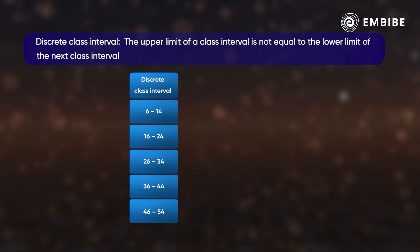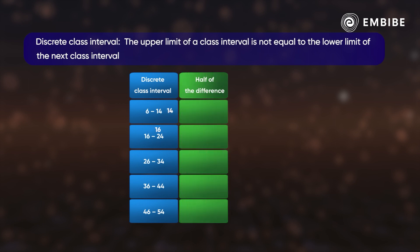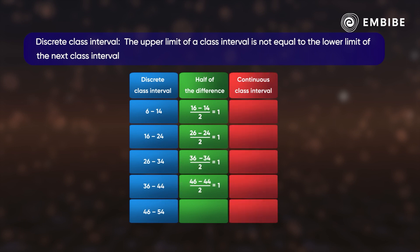Next, let us move on to the case where the data is grouped into class intervals. If the data is given in discrete class intervals — where the upper limit of a class interval is not equal to the lower limit of the next — the first step is to convert them into a continuous frequency distribution. For this conversion, find half of the difference between the upper limit of one class and the lower limit of the next, then subtract this from the lower limits and add it to the upper limits.